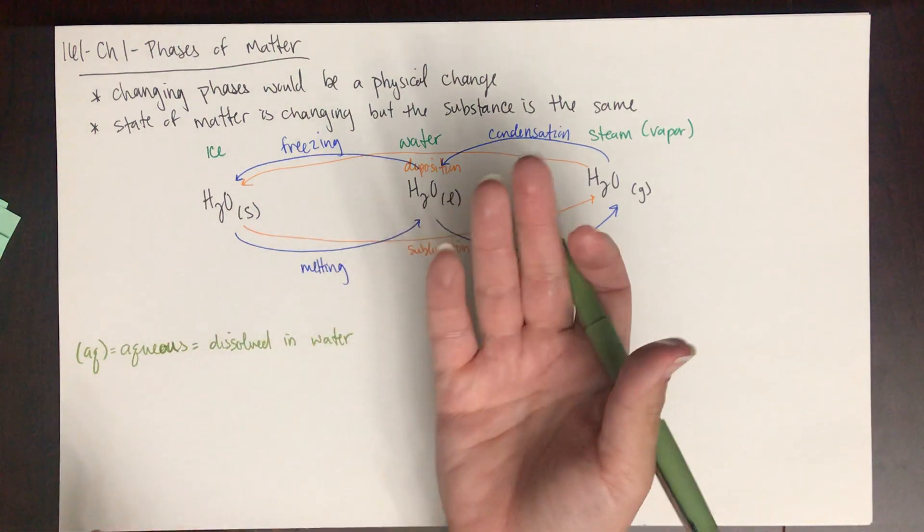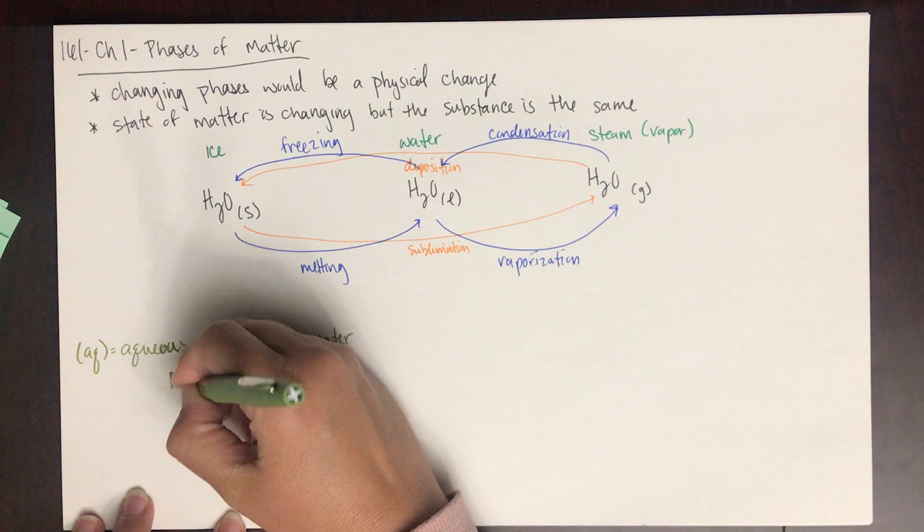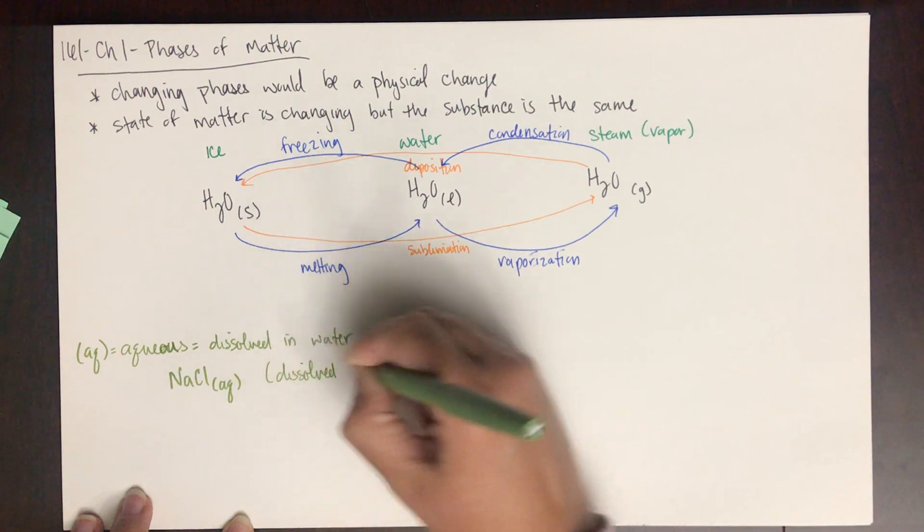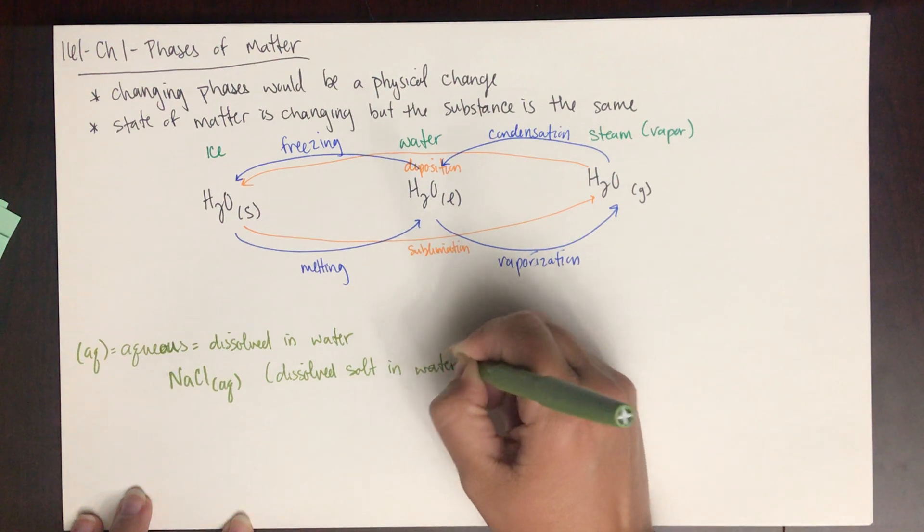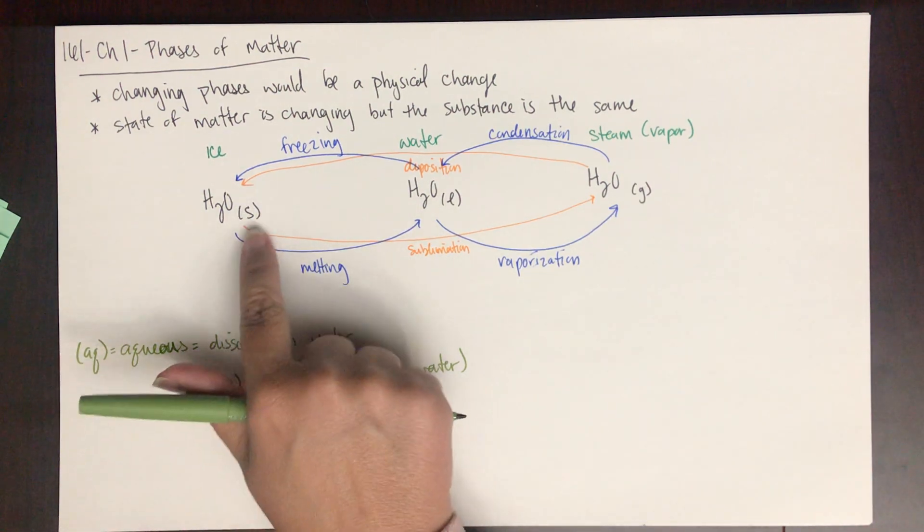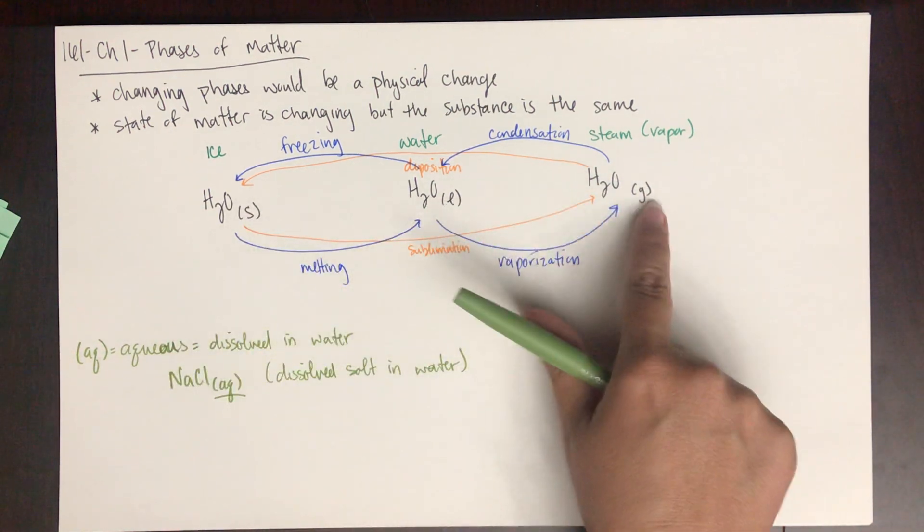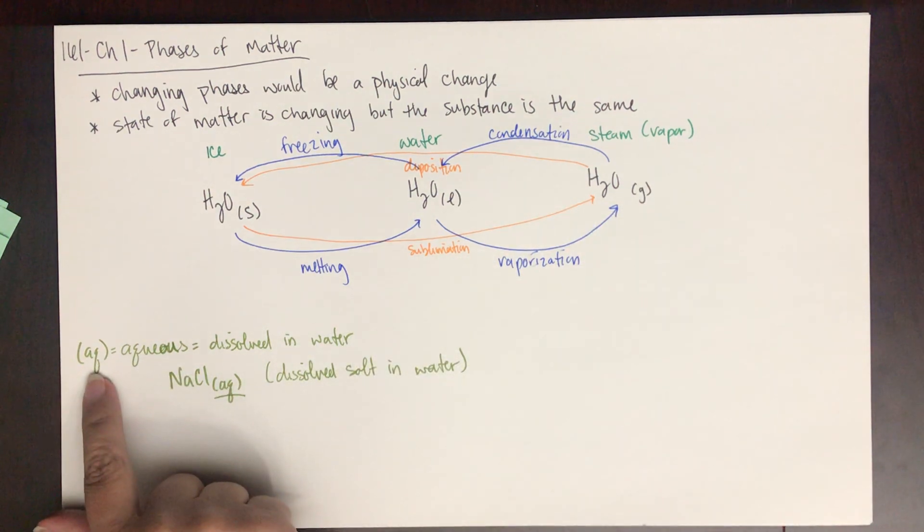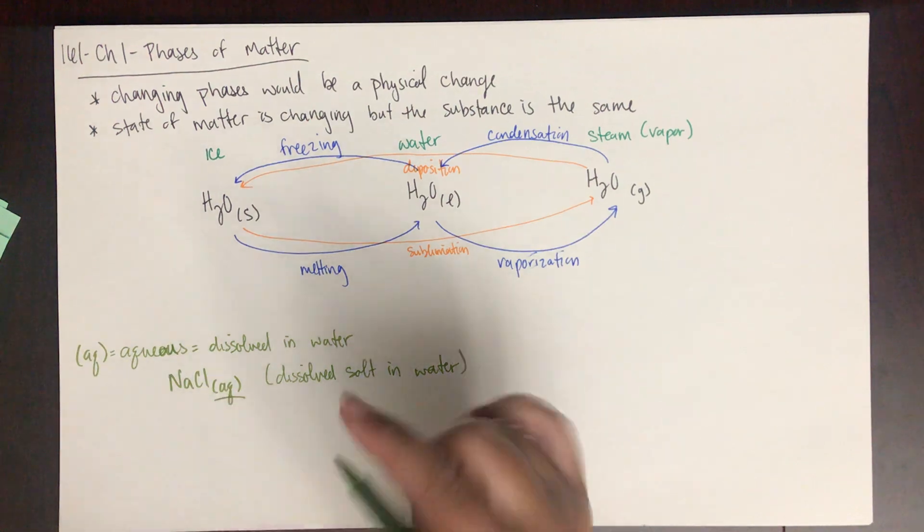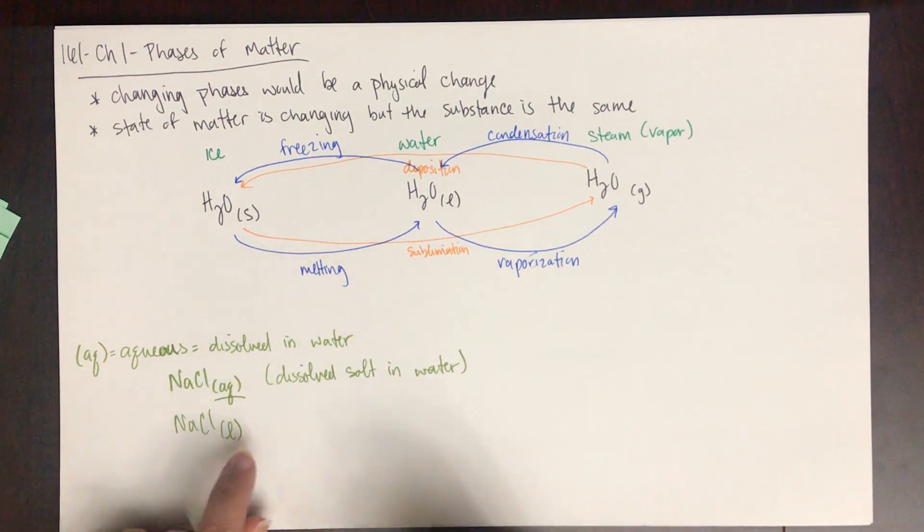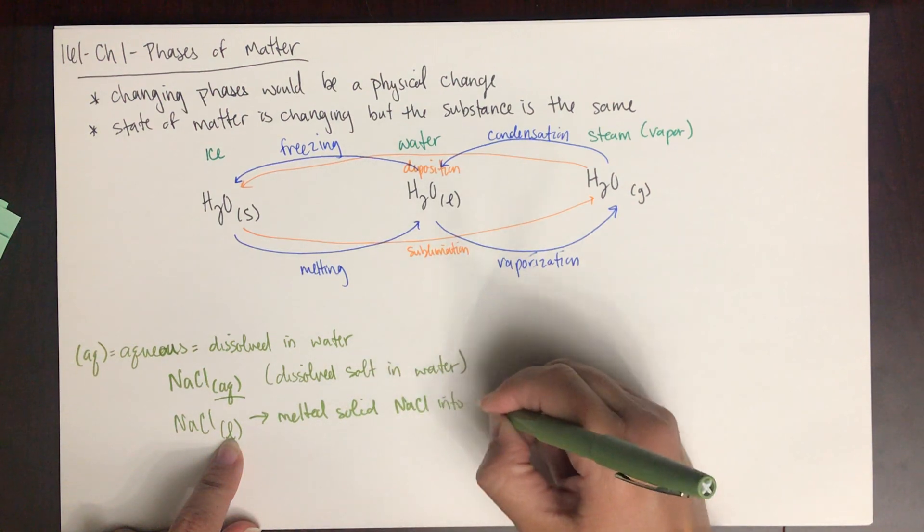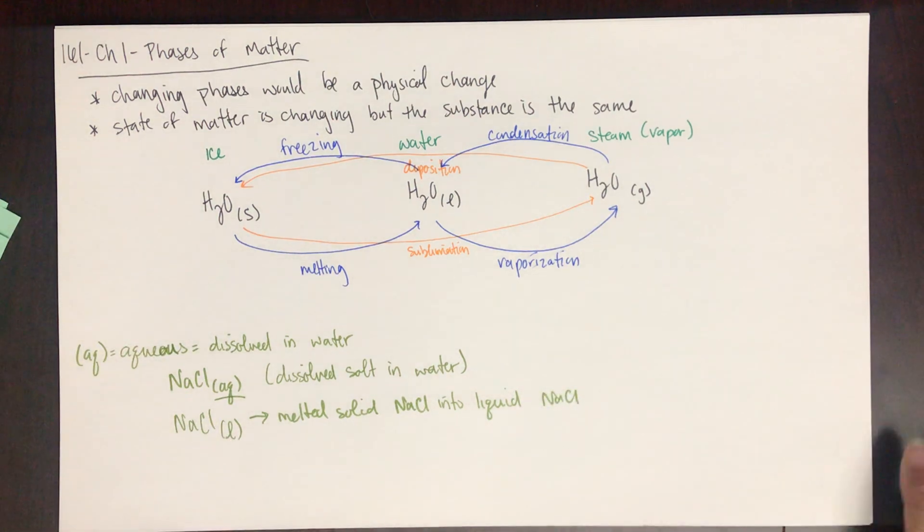A good example is if you make salt water. If you have a solution with salt water in it, it would be NaCl aqueous, because that means you have dissolved salt in water. You'll see this aq a lot in labs or in chemical reactions. You'll see solids, liquids, and gases which tell you the phase of matter that chemical is in.